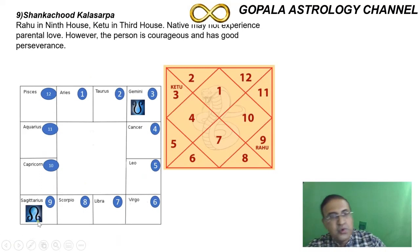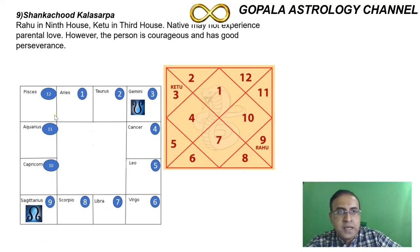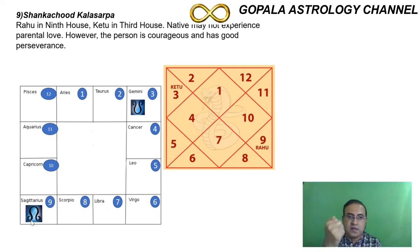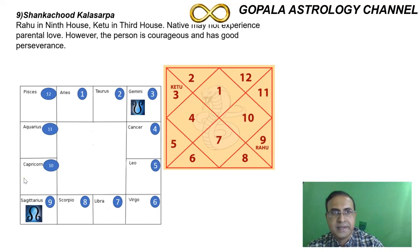In Shankachuda Kala Sarpa Dosha, the person will be devoid of fatherly love since the ninth house is also the house of the father. This person will have a lot of arguments with the father and won't agree with whatever the father says, because the person will actually be more intelligent than the father. For good reason, they will go out of the motherland. The next is Gatha Kala Sarpa Dosha — Rahu goes to the tenth house and Ketu goes to the fourth house.